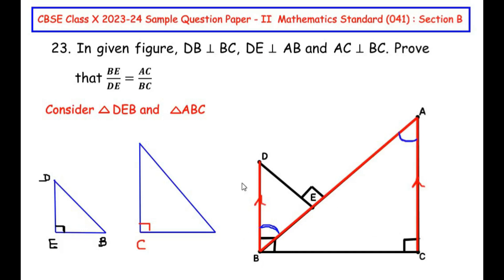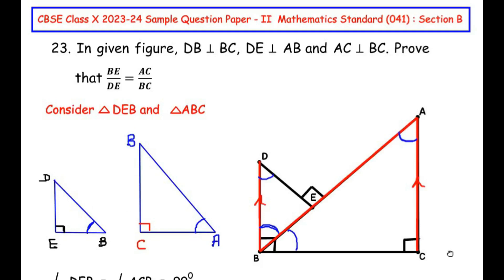So in triangle DEB, angle B is equal to angle A in triangle ABC. By the angle sum property of a triangle, angle D becomes equal to angle B. Therefore angle E equals angle C, angle B equals angle A, and angle D equals angle B — these two triangles become similar by the angle-angle-angle similarity criterion.